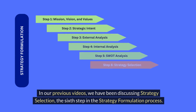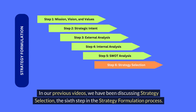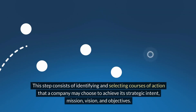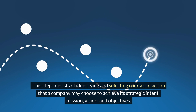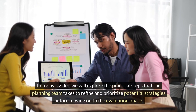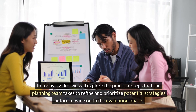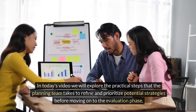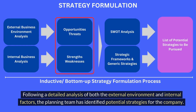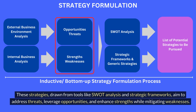In our previous videos we have been discussing strategy selection, the sixth step in the strategy formulation process. This step consists of identifying and selecting courses of action that a company may choose to achieve its strategic intent, mission, vision, and objectives. In today's video we will explore the practical steps that the planning team takes to refine and prioritize potential strategies before moving on to the evaluation phase. Following a detailed analysis of both the external environment and internal factors, the planning team has identified potential strategies drawn from tools like SWOT analysis and strategic frameworks, aiming to address threats, leverage opportunities, and enhance strengths while mitigating weaknesses.